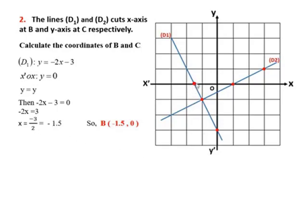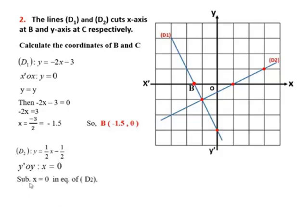Put B on the graph. To calculate the coordinate of C, we need the equations of D2 and the y-axis. We solve this system by substitution — substitute x equals 0 in the equation of D2. Then we get y equal minus half, or minus 0.5. So C equals (0, −0.5). Put C on the graph.